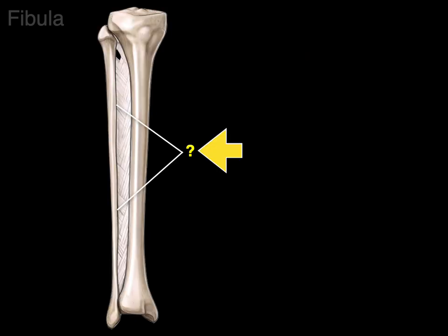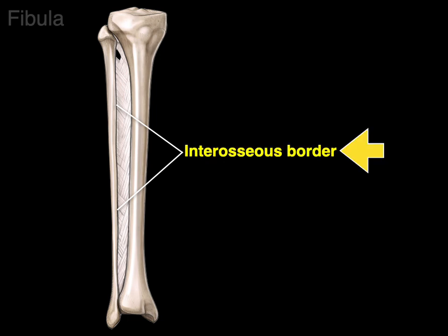On the medial surface of the fibula is also an interosseous border, which serves as an attachment for the interosseous membrane that connects to the interosseous border of the tibia. That dense collagenous connective tissue — the interosseous membrane — forms a syndesmosis joint that knits the tibia and fibula together.